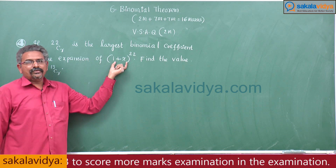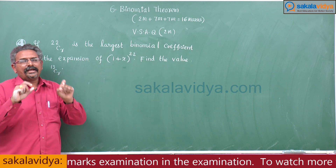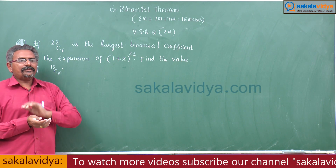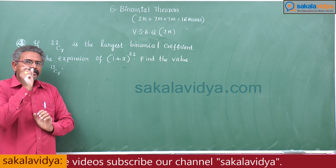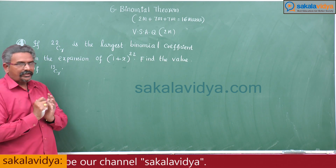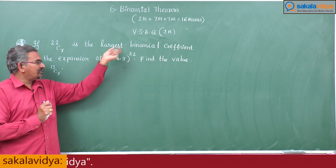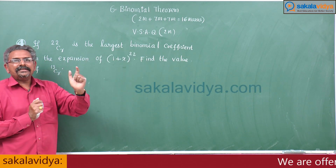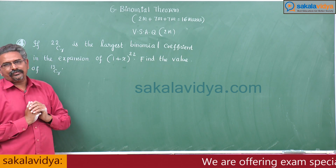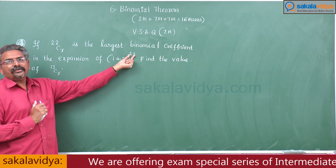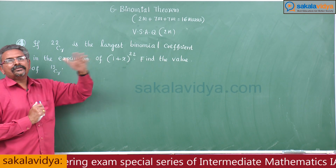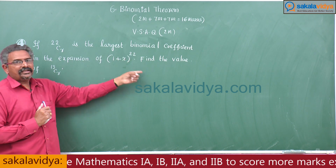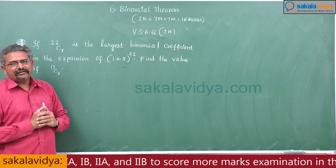The form (1+x)^n is the standard form of the binomial theorem. In the standard form, the largest binomial coefficient — when n is even — is nC(n/2). Since n = 22 is even, the largest coefficient is 22C11. Since 22Cr = 22C11, comparing gives r = 11.